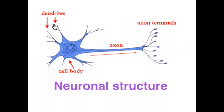Dendrites contain specialized receptor sites which receive incoming messages conveyed via neurotransmitters, so they collect information. The cell body integrates this information, and if there's enough activity an electrical impulse will be generated and conveyed by the long slender projection — the axon. At the end of the axon we have the axon terminals, which will potentially send outgoing messages via neurotransmitters.